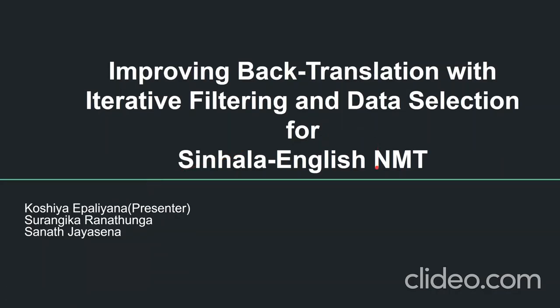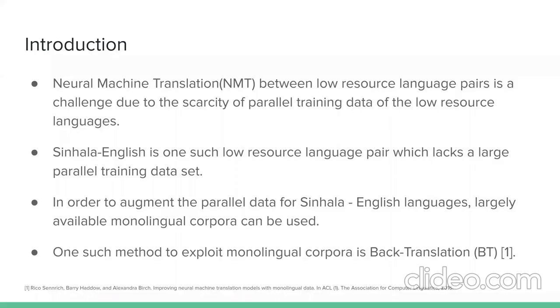Improving back-translation with iterative filtering and data selection for Sinhala-English NMT. Neural machine translation requires large parallel datasets to perform well. For low-resource language pairs like Sinhala-English, NMT is a challenge due to the scarcity of parallel training data, as Sinhala-English does not have a large parallel corpus for training.